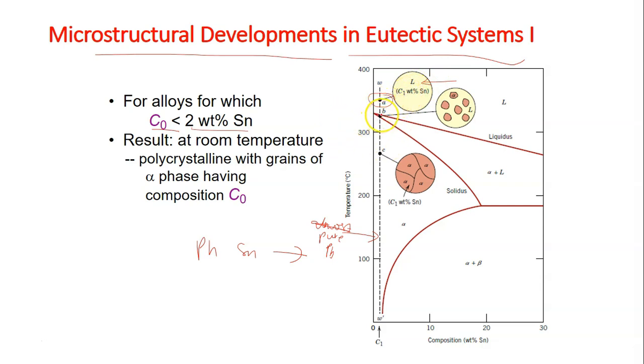And upon further cooling to this point B, it actually enters this alpha plus liquid region in which there will be some formation of alpha solid. You can see for the microstructure development, this is solid and yellow colored, so-called, is liquid. As it goes down further cool, as the temperature decreases.